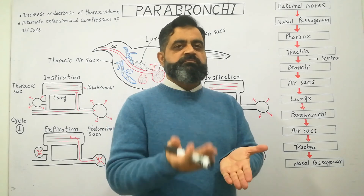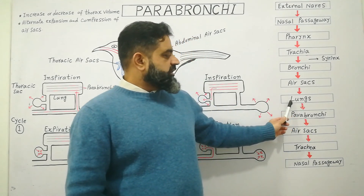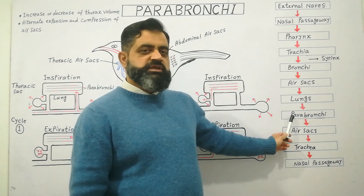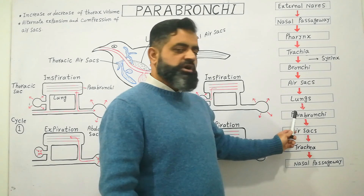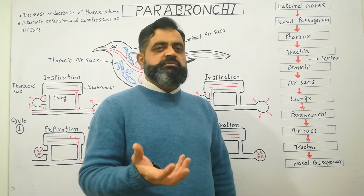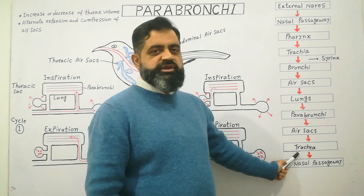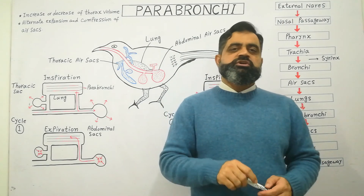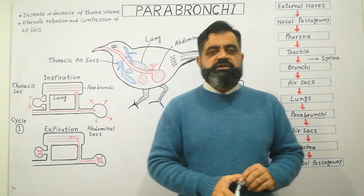Oxygen moves into the blood and CO2 is taken away. After gaseous exchange in the lungs and parabronchi, the air containing more carbon dioxide moves into the thoracic air sacs, and from there into the trachea, and then the air containing CO2 is expelled outside the body. In this way the process of respiration is completed.